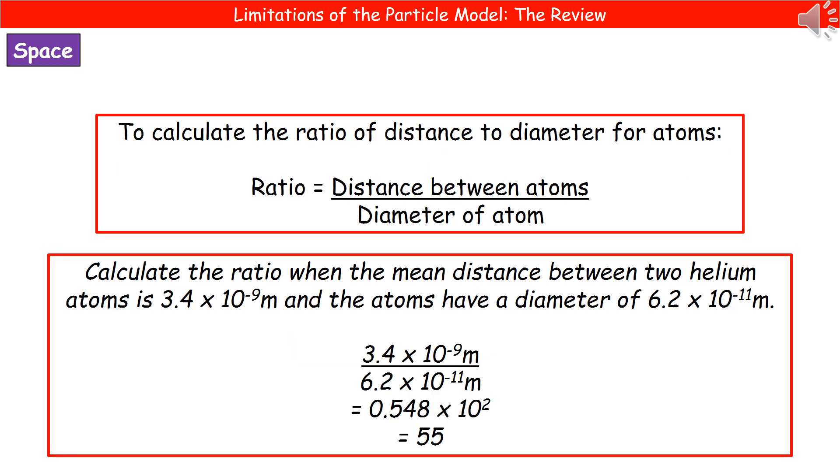One thing you might be asked to do on the exam is to calculate the ratio of distance to diameter for the atoms. In order to do that, all you're going to do is take the distance between the atoms and divide that by the diameter of the atom itself.